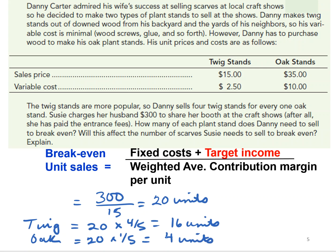It also asks how this will affect the number of scarves Susie needs to sell to break even. Susie's fixed costs are going to go down by $300 because she's charging her husband for the booth, which means she's going to have to sell fewer scarves. We don't have the information about her contribution margin, but it certainly would affect the number of scarves she would need to sell.